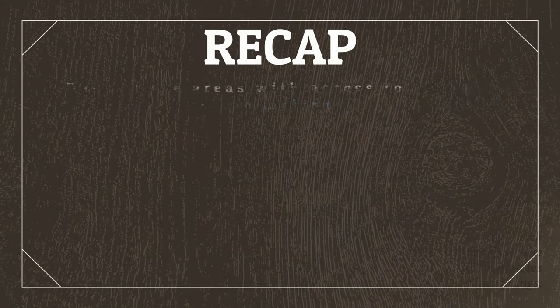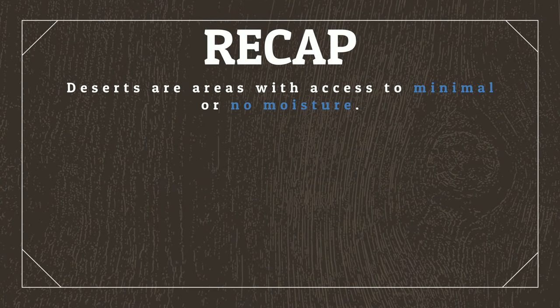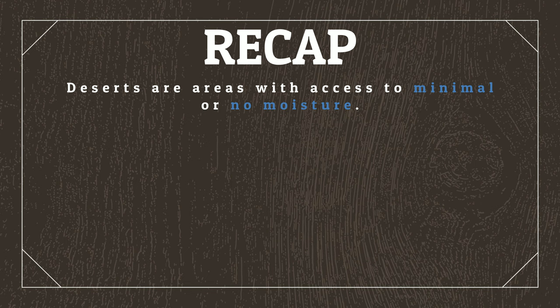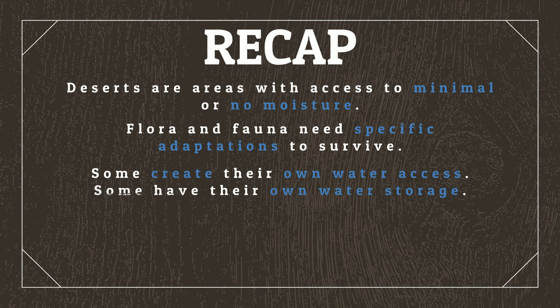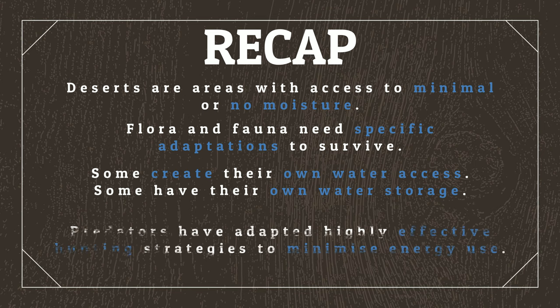So, to recap: deserts are categorized as areas with access to minimal or no moisture, with flora and fauna there needing very specific adaptations to survive. Some species use unique methods to create their own water access, while others have adapted water storage to carry water around with them. Predators have also adapted highly effective hunting strategies, such as powerful venom, to minimize the energy required for each hunt and to increase the chance of securing a meal.